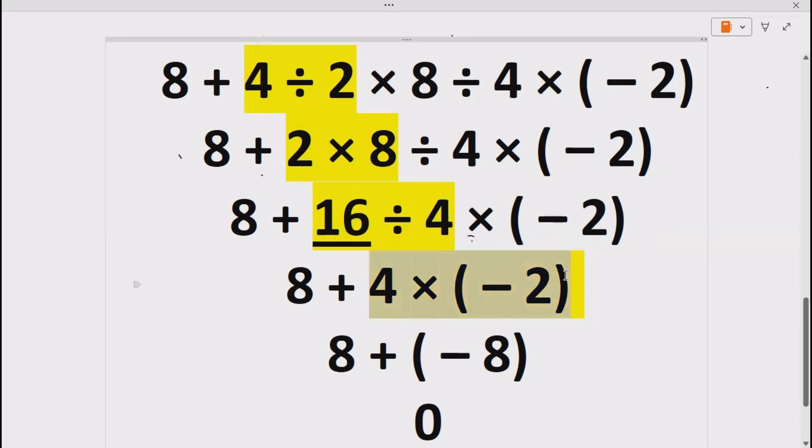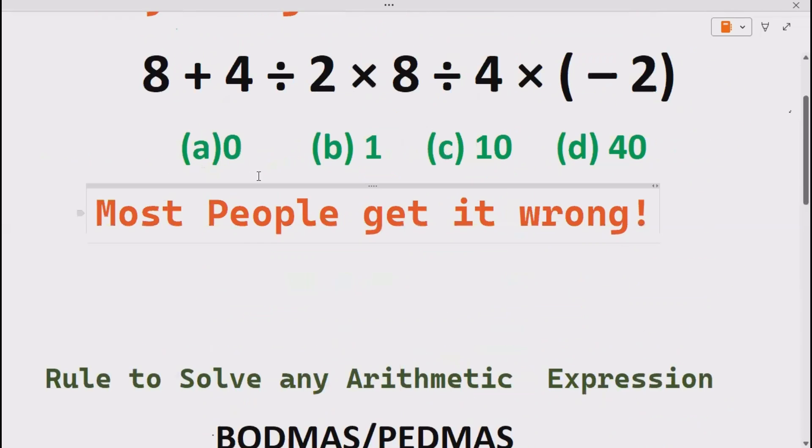Here we can do this multiplication according to BODMAS or PEMDAS. Four times two gives us eight, and the minus sign remains. That is it. Now eight plus and eight minus gives us zero, i.e., the correct answer is part A.